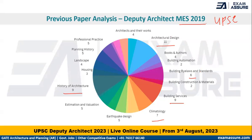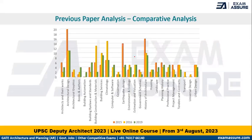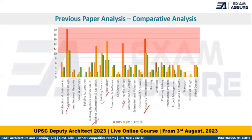If we cumulatively analyze and compare these three papers, we see that Architectural Design, Building Services, Building Construction, Climatology, Earthquake Design, and History of Architecture have been given a lot of weightage. Roughly between 10 to 20 questions come from these topics: Architectural Design, Building Construction, Climatology, and History of Architecture.